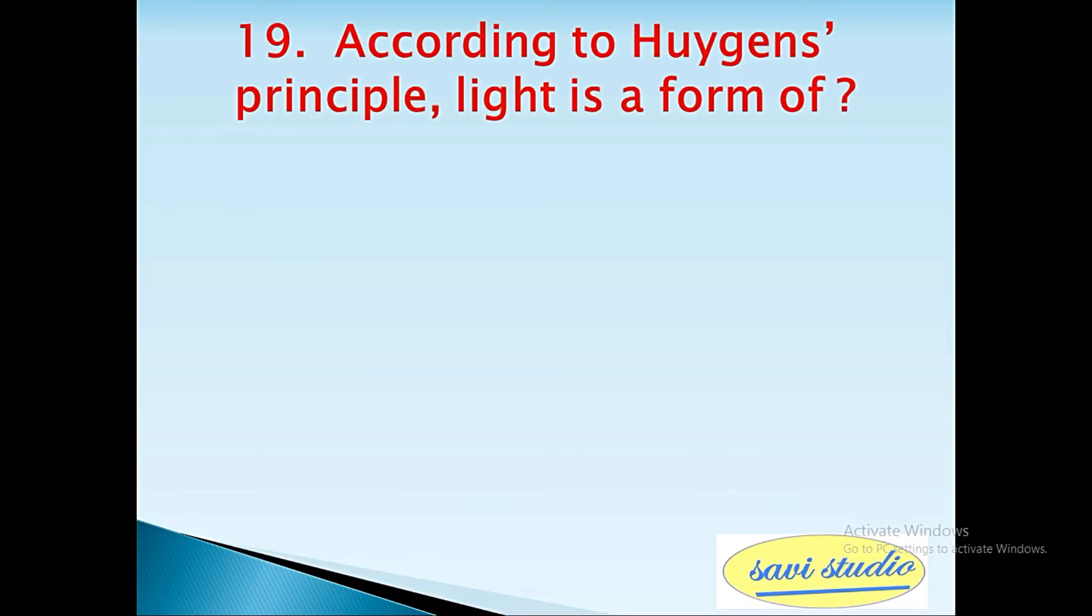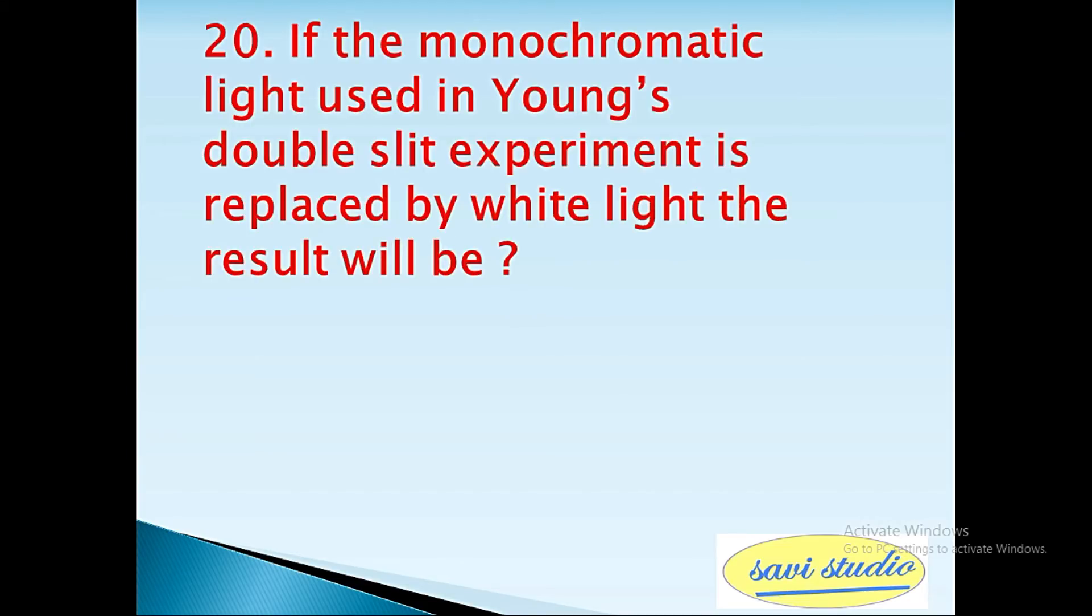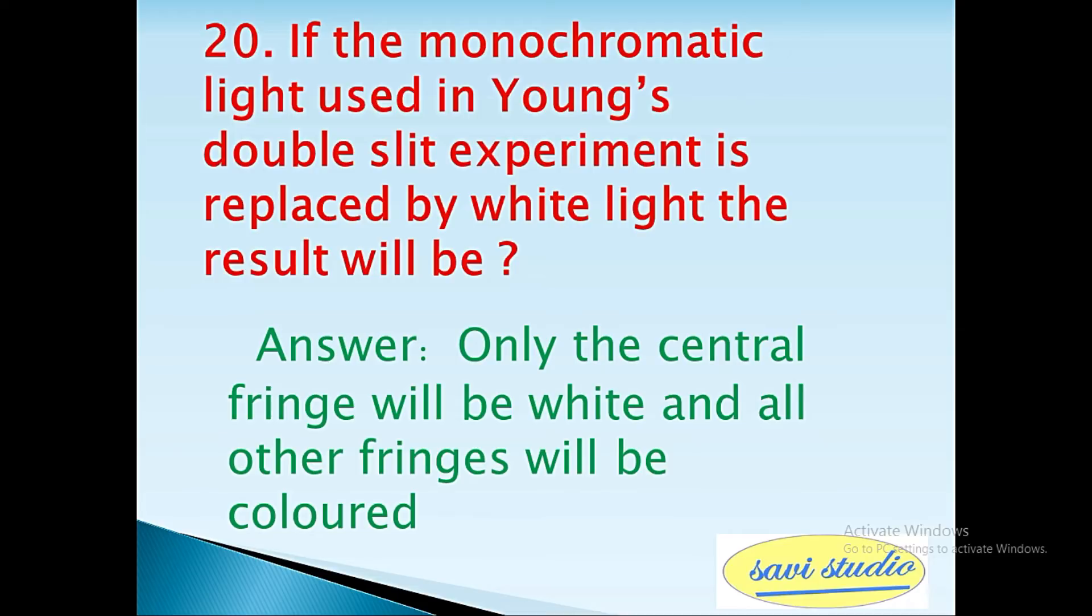19th question: According to Huygens principle, light is a form of? Answer: wave. 20th question: If the monochromatic light used in Young's double slit experiment is replaced by white light, the result will be? Answer: only the central fringe will be white and all other fringes will be colored.